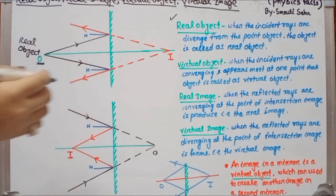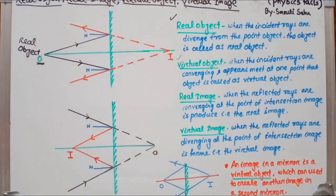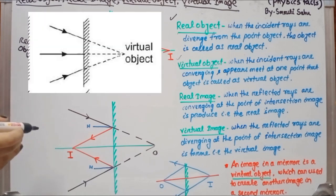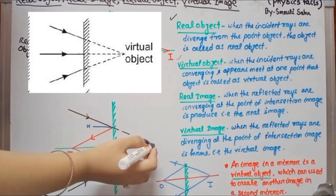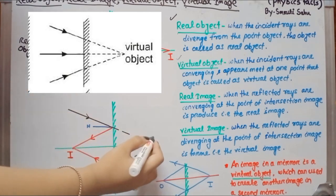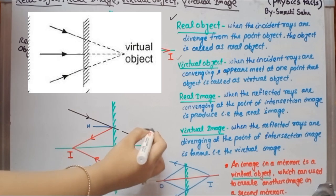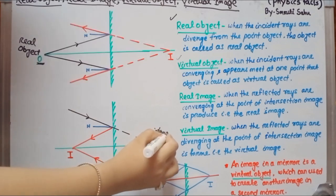Now we go to the second one: virtual object. What is a virtual object? When the incident ray converges, or appears to meet at a point, at that condition that object is called a virtual object.